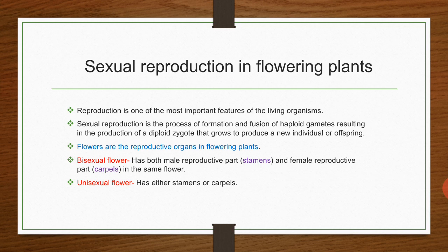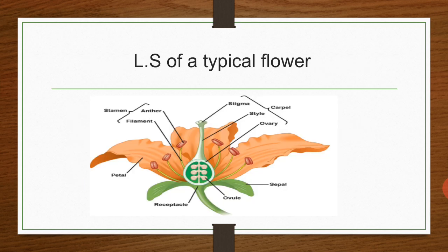Flowers may be bisexual or unisexual. A bisexual flower has both the male reproductive part, i.e. stamens, and the female reproductive part, i.e. carpels, in the same flower. Whereas a unisexual flower has either stamens or carpels. Now let's see the longitudinal section of a typical flower which shows all the floral parts or appendages along with the male and female reproductive organs.